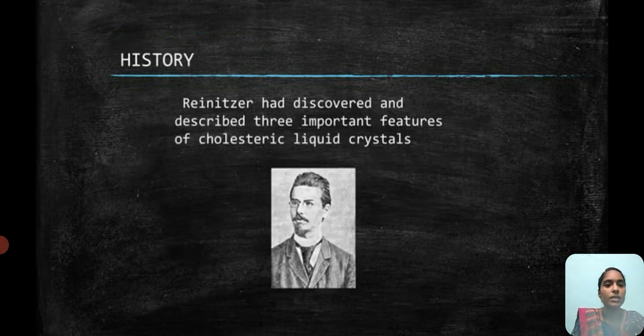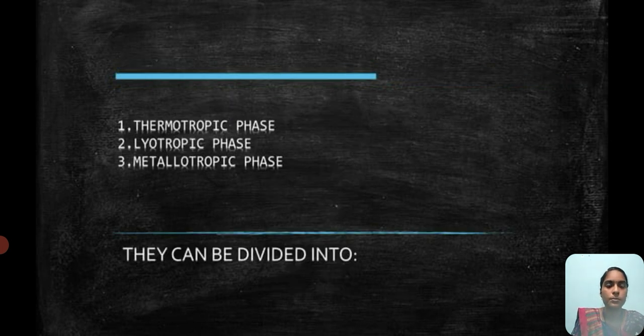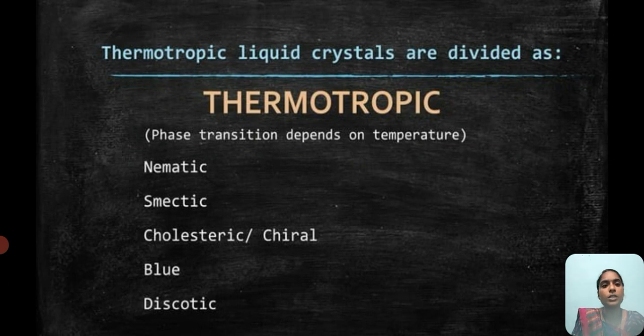It was discovered by a researcher by the features he studied in a cholesterol liquid crystal. They can be divided into three types, namely thermotropic phase, lyotropic phase, and metallotropic phase. Liquid crystals are divided into several phases depending upon the temperature.